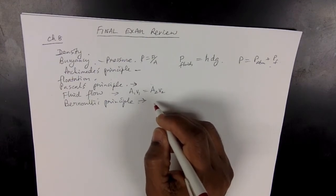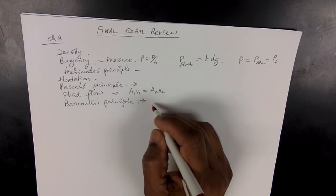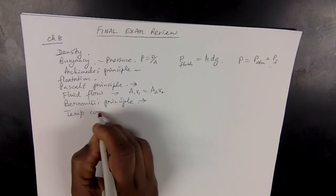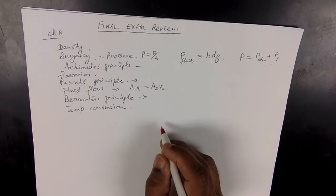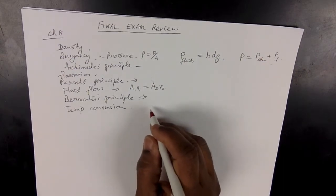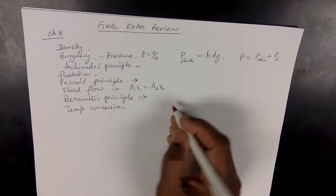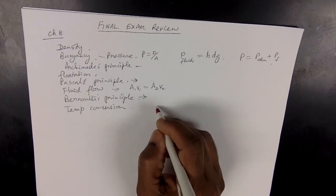Moving on from fluids to Chapter 9, which is heat. What you should know in Chapter 9 is, first, temperature conversions. You can look in your textbook on pages 300–301 for temperature conversions — you've done a bunch of them in class. Make sure you know how to convert from Celsius to Fahrenheit, Fahrenheit to Celsius, and Celsius to Kelvin.